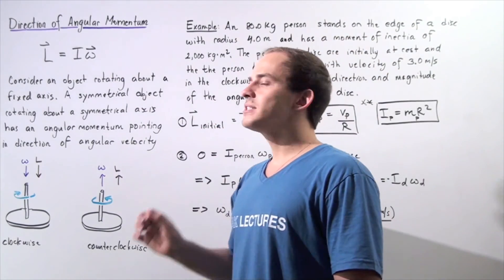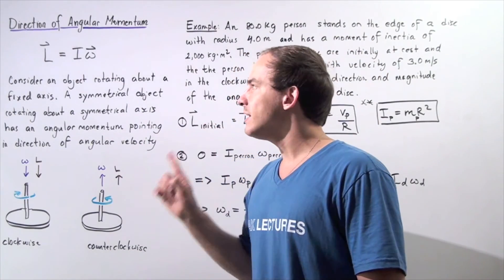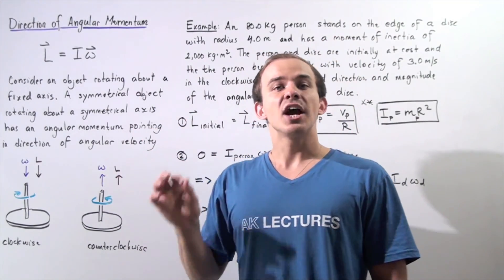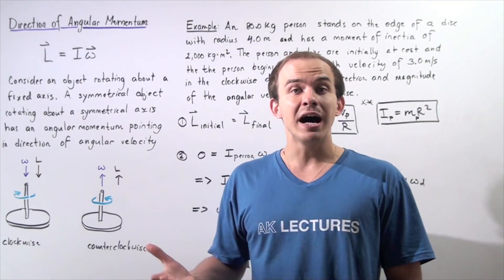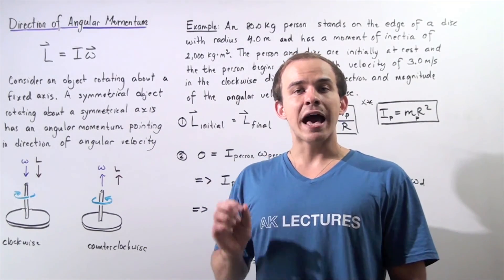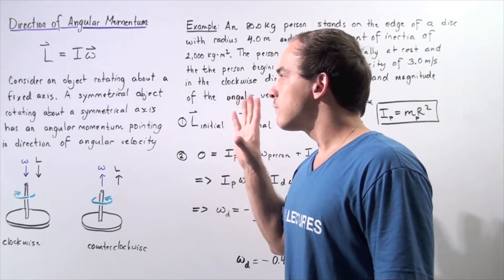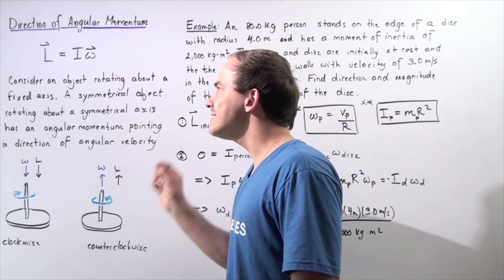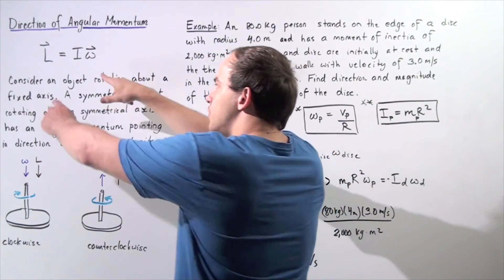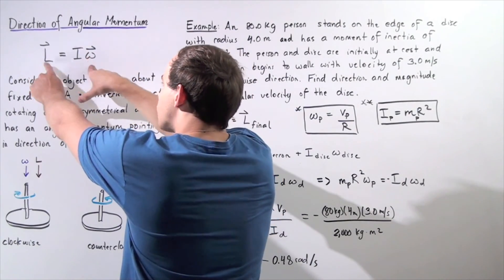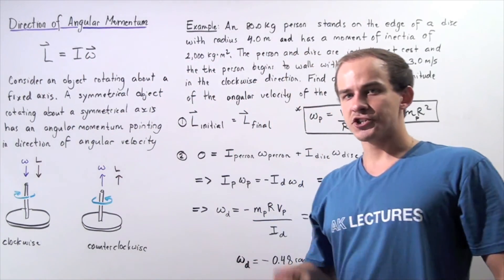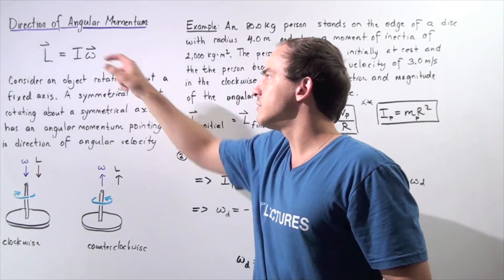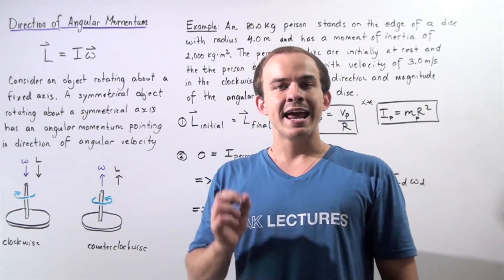This equation gives us the magnitude of the angular momentum vector. And because it's a vector, it also has direction. How exactly do we find the direction of our angular momentum? For such an object, the direction of the angular velocity is in the same direction as the angular momentum — these two vectors point in the same exact direction. Recall from a previous lecture, to find the direction of angular velocity, we have to use the right-hand rule.